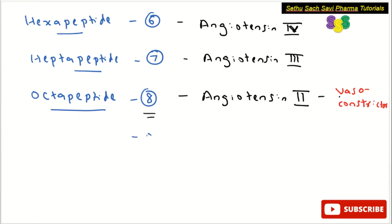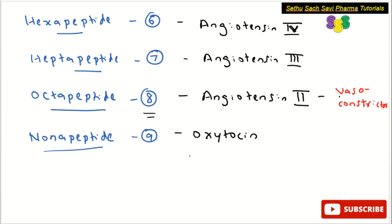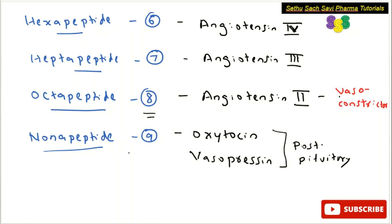Coming to nonapeptide — nine amino acids. The important examples are oxytocin and vasopressin, both secreted by the posterior pituitary gland; they contain nine amino acids and belong to the nonapeptide category. One more example of a nonapeptide is bradykinin, which is an inflammatory mediator and a potent vasodilator, also containing nine amino acids.